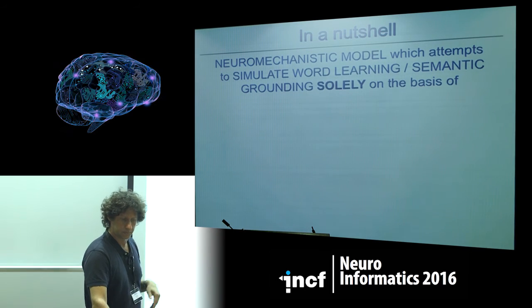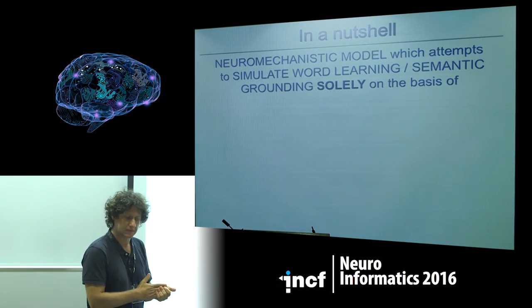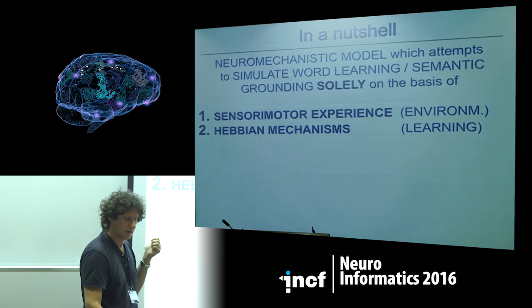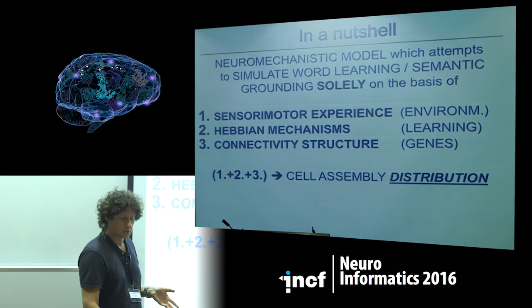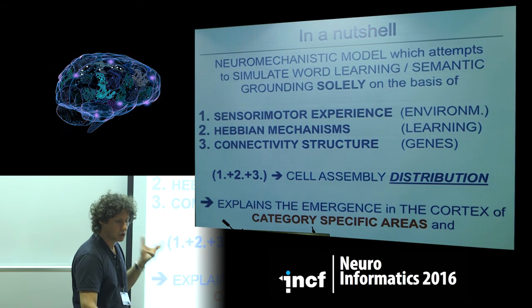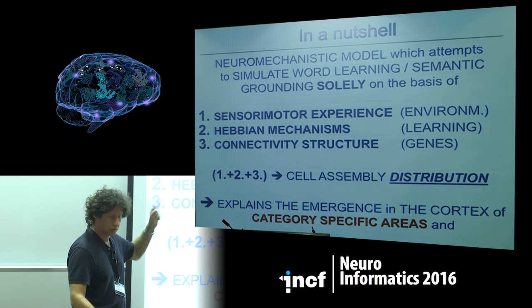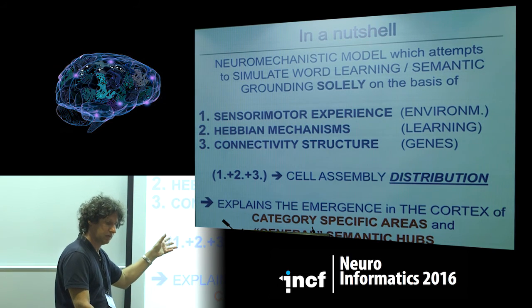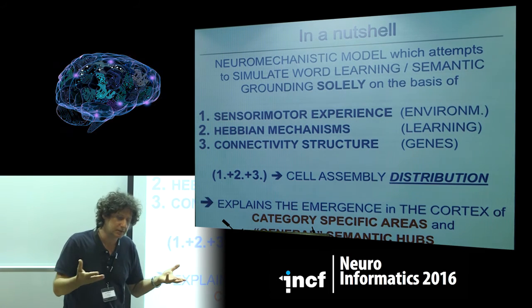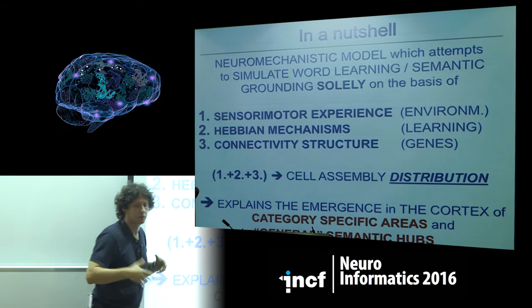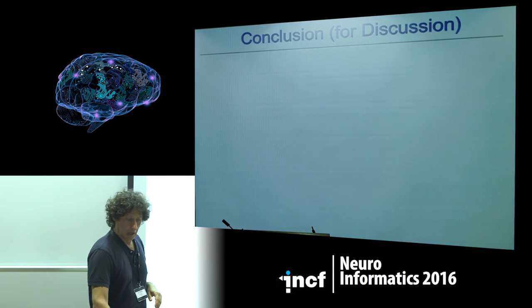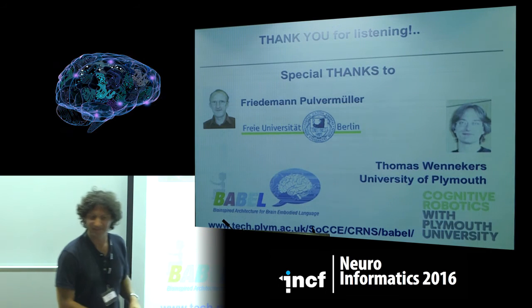In summary, this neuromechanistic model simulates word learning and semantic grounding on the basis of three elements: sensory motor experience, Hebbian mechanisms, and connectivity structure. These three components lead to specific cell assembly distributions, which explain the emergence of two types of cortical areas — category-specific and general semantic hubs. Category-specific areas reflect what is known as embodied cognition, while general semantic hubs are disembodied. The model explains both.